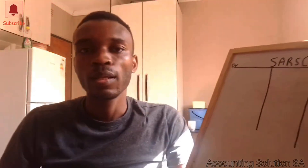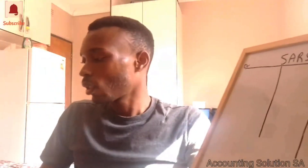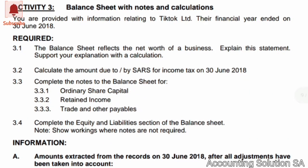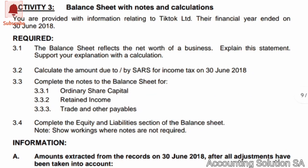First, let's check our information. Activity number three covers a balance sheet with notes and calculations for TikTok Ltd, financial year ended 30 June 2018. The requirements include completing a balance sheet (3.2), calculating the amount due to or by SARS for income tax at 30 June 2018 (3.2), and preparing the trade and other payables note (3.3.3).